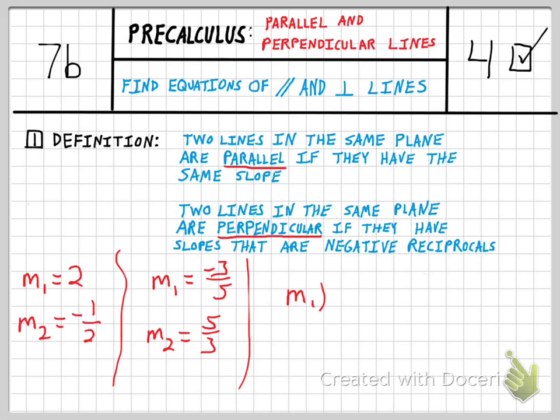Another way you can remember that is that the product of two negative reciprocals will always be the number negative 1. So on our first example, 2 times negative 1 half is negative 1, and negative 3 fifths times 5 thirds is also negative 1.